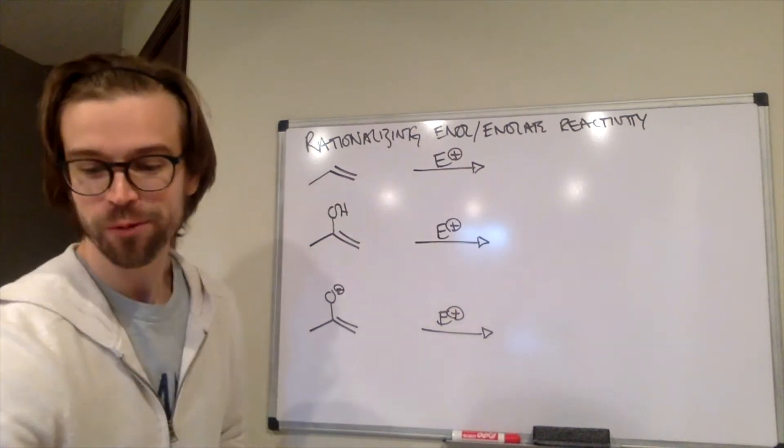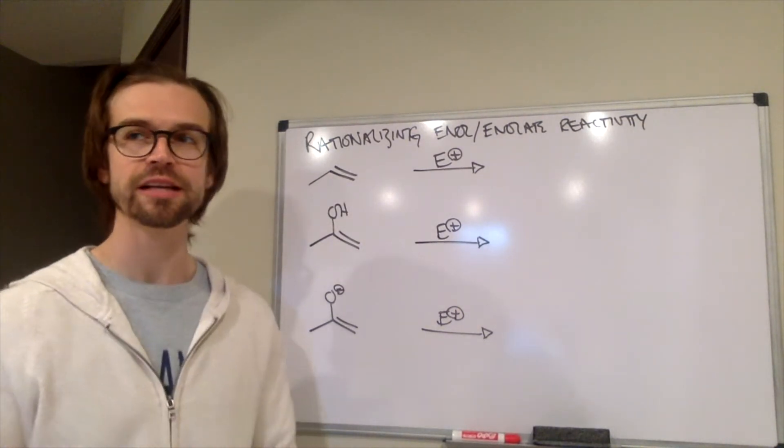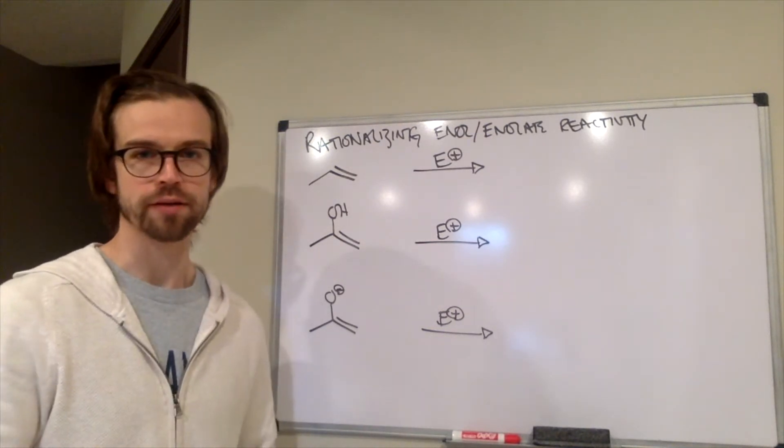So we've learned about why enolates are stable, we've learned about how to synthesize kinetic versus thermodynamic enolates, we've learned about enolate equivalence. Well, how the heck do these enolates react with electrophiles?